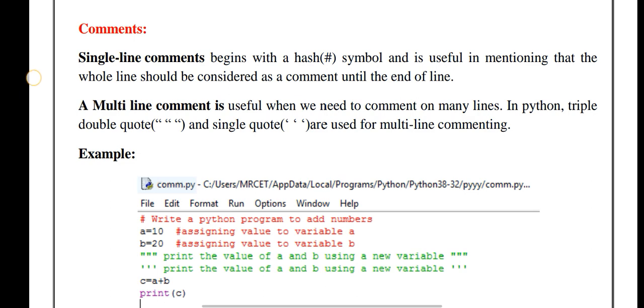Let's start. First, we will see single-line comments. Single-line comments begin with a hash symbol and are useful in mentioning that the whole line should be considered as a comment until the end of line. If we want to make a single-line comment, we can put a hashtag and the comment.